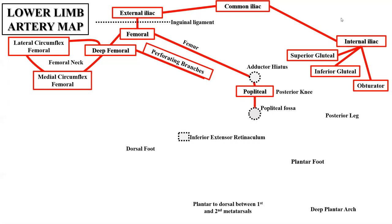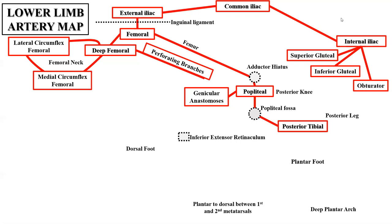As the femoral artery goes through the adductor hiatus, it changes names to the popliteal artery, traveling along the posterior side of the knee. Before the popliteal artery reaches the popliteal fossa, it gives off branches called the genicular anastomoses — collateral blood supply to the knee joint. Once in the popliteal fossa, it splits into the anterior and posterior tibial arteries. Going down the posterior side, the posterior tibial gives off the fibular artery. If your textbook uses the word peroneal instead of fibular, it's the same thing — fibular is simply the newer nomenclature. The fibular artery gives off the calcaneal branches, supplying the posterior ankle region.